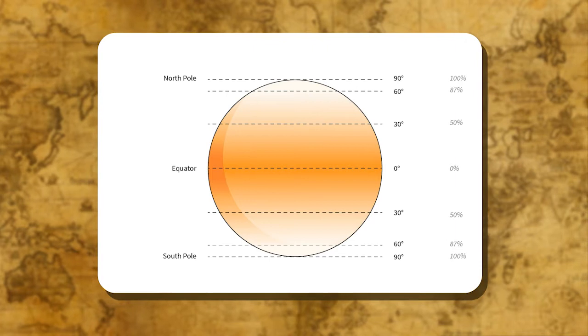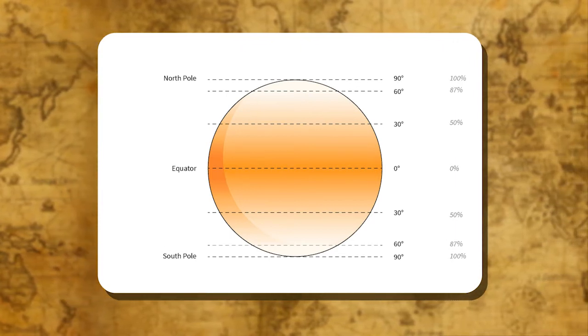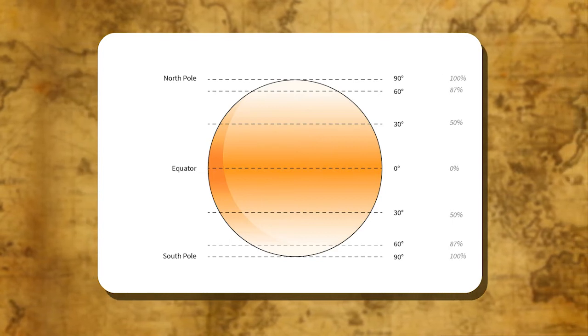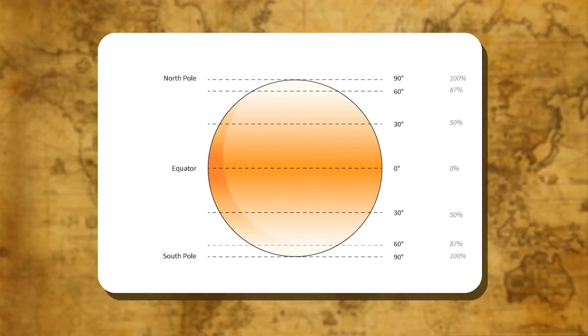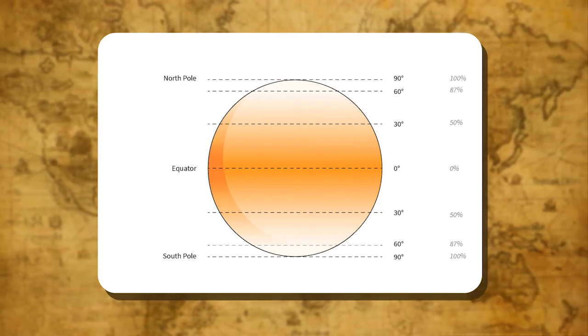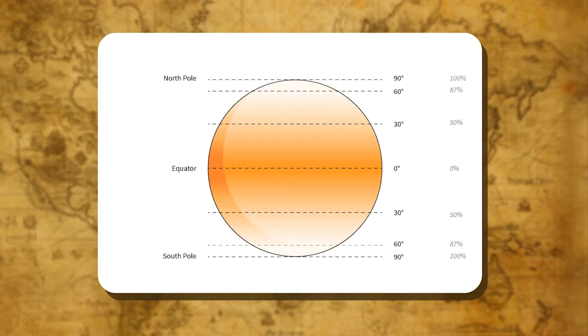The latitude enables us to know the distance of a place from the equator and from one latitude to another. The most important use is that, together with longitude, they enable us to know the exact location of a place on the surface of the earth.